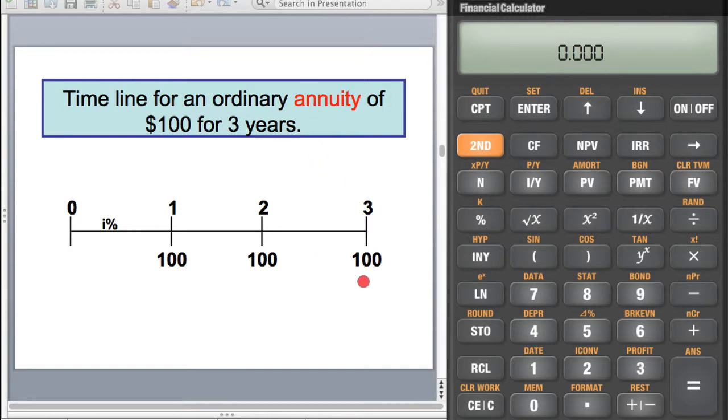Some back of the envelope calculation would indicate that it'll be at least $300, and if the interest rate is 10%, that's $30. So it should be at least $330.